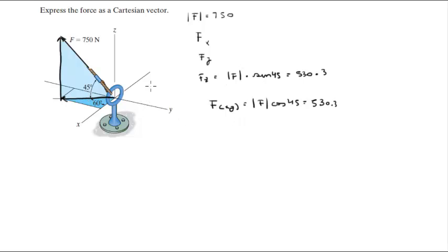Now, with this projection we can find the X and Y components. The X component is the projection times the cosine of 60, and the Y component is the projection times the sine of 60.